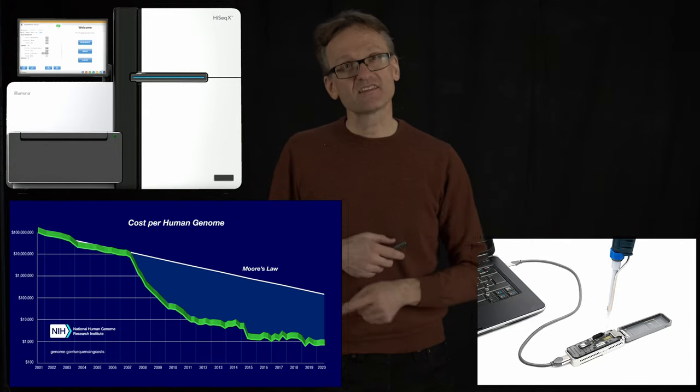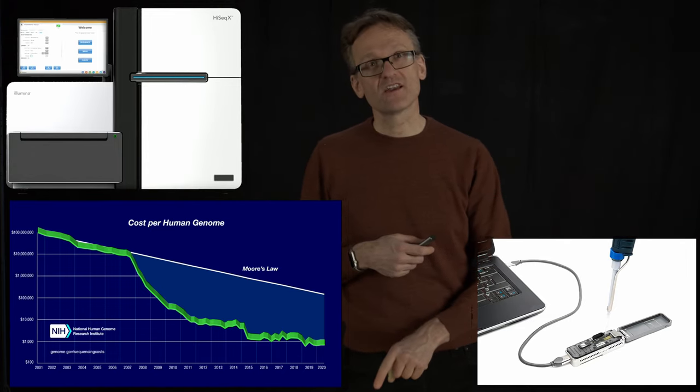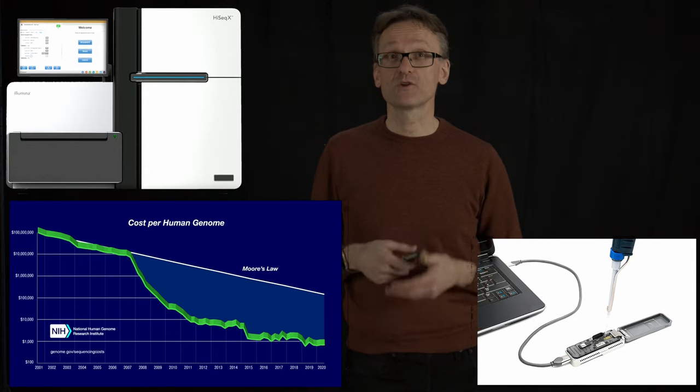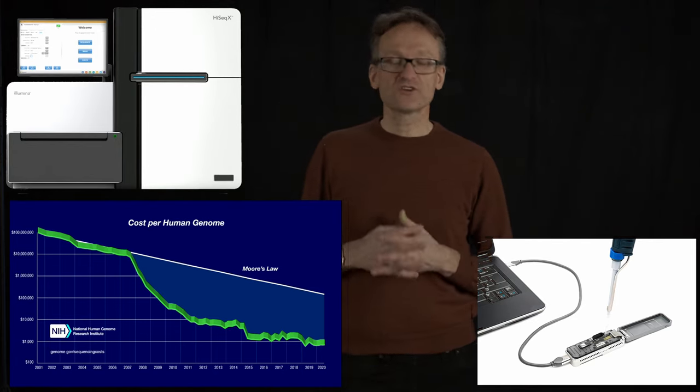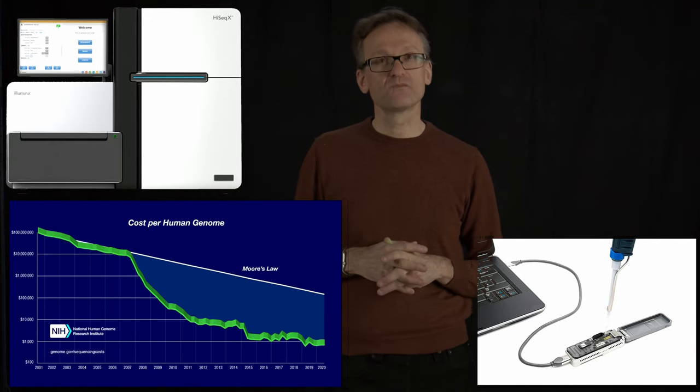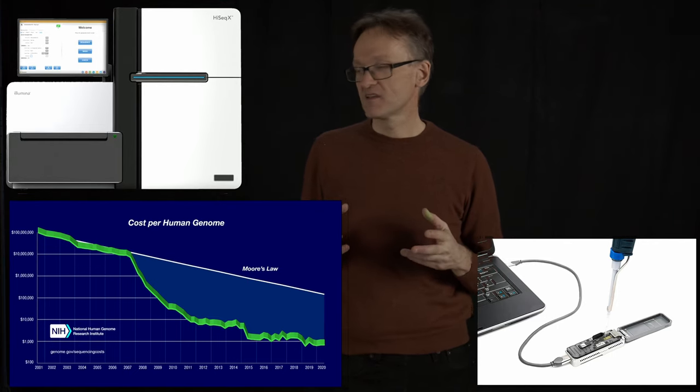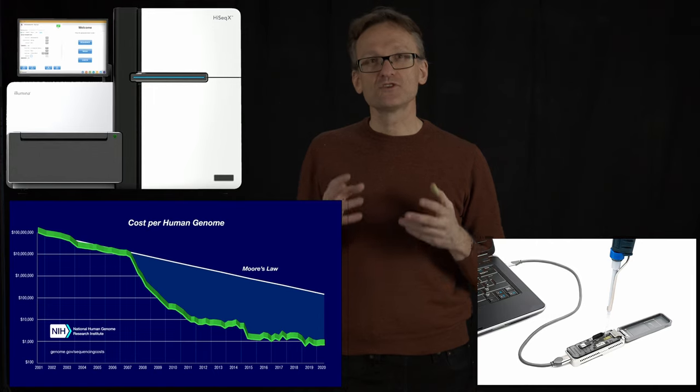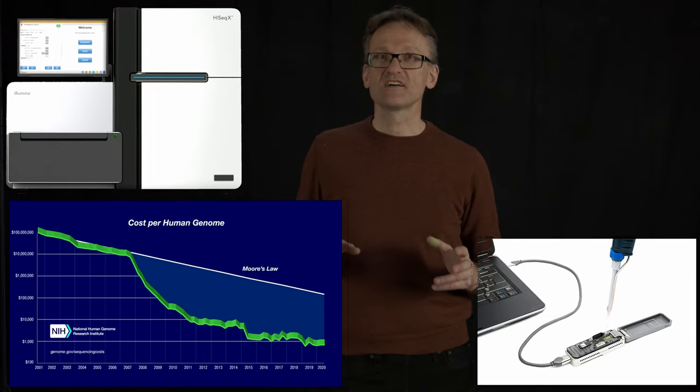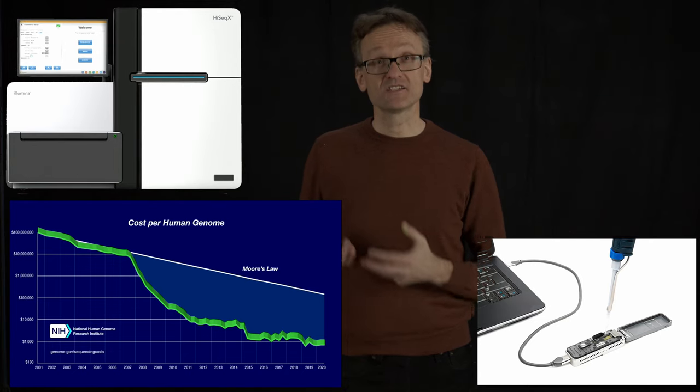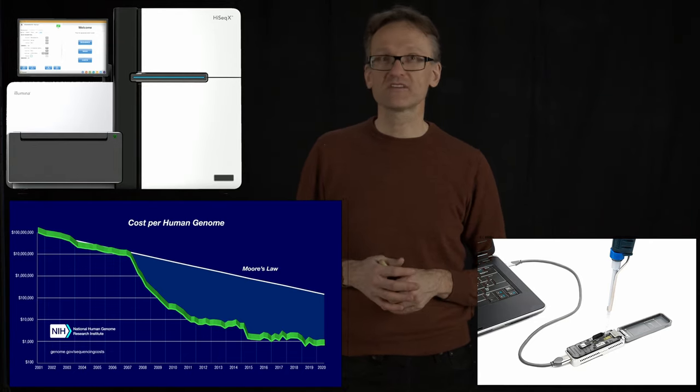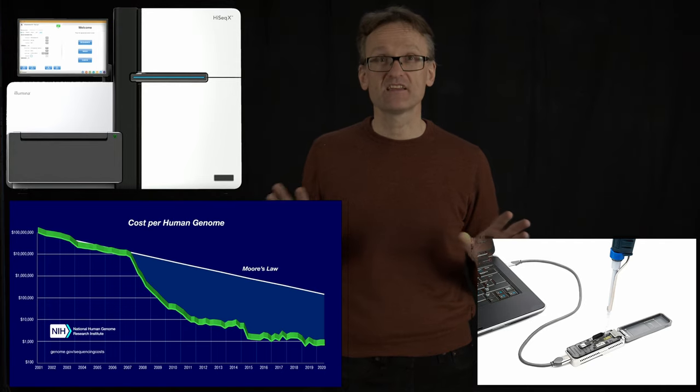So I predict that this plot will keep going down another order of magnitude. This is so cheap that we're going to do it everywhere. And somewhere here, we start to change not the laws of physics, but the laws of science. Today, there is no other method anywhere in science that is generating as much information as quickly as genome sequencing. And I'm not limiting this to life science. I think this is valid for any field of science.